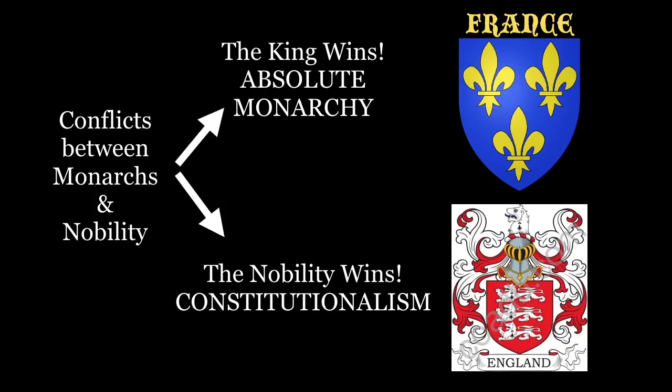In both of these kingdoms, we're going to witness a showdown between the monarch and the nobility. The king is going to assert his authority and power over the people, claiming that he gets his power from God — something called divine right. And the aristocracy is going to push back, claiming that they have ancient privileges that need to be respected, that the king has a duty to protect aristocratic privileges, and that the aristocrats should have a say on things like whether or not the kingdom goes to war, or whether or not they should levy taxes.